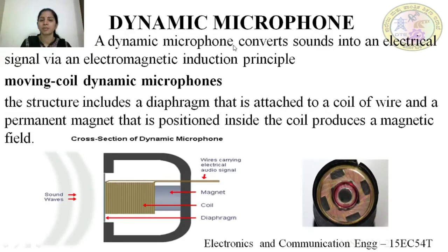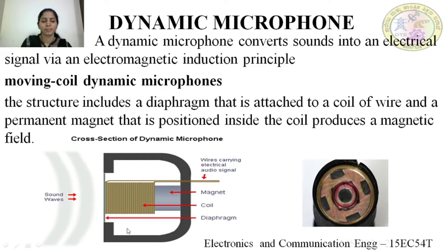Dynamic microphone is an input transducer which converts input sound waves into an electrical signal. The working principle of dynamic microphone is electromagnetic induction principle. The first type of dynamic microphone is a moving coil mic. All sound engineers simply call it as a dynamic mic only. This is the construction of a dynamic microphone, which includes a diaphragm that is directly attached to the coil of wire and a permanent magnet that is positioned inside the coil, producing a magnetic field.